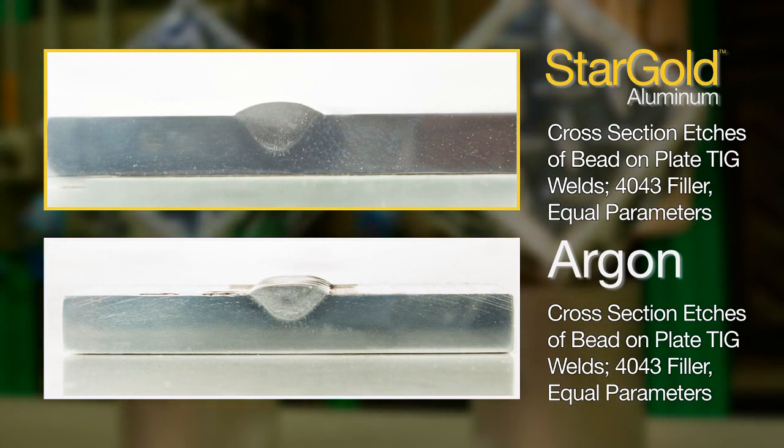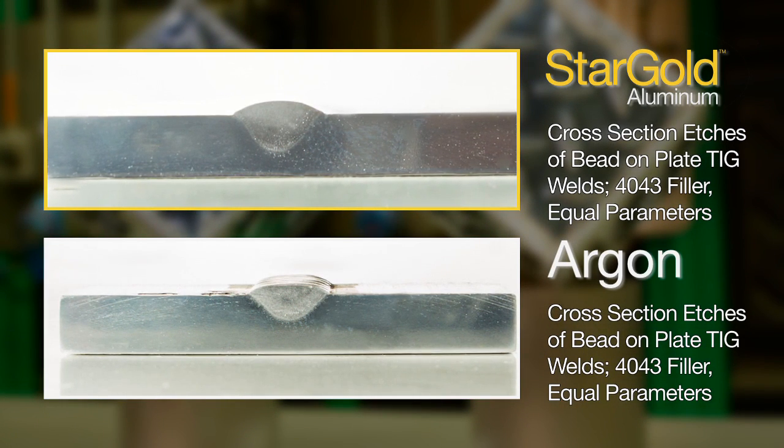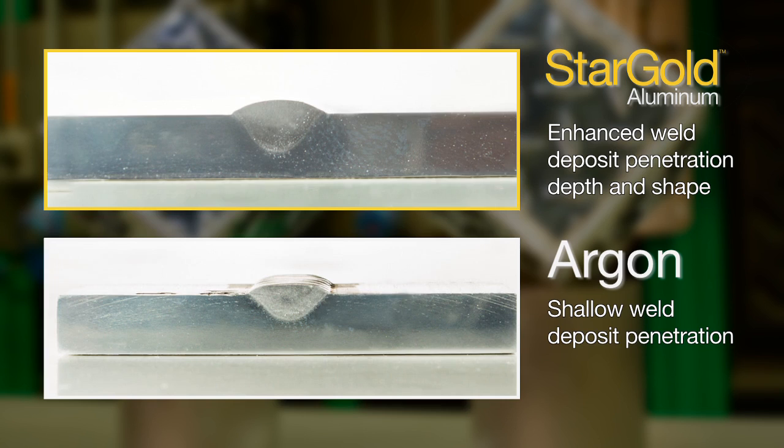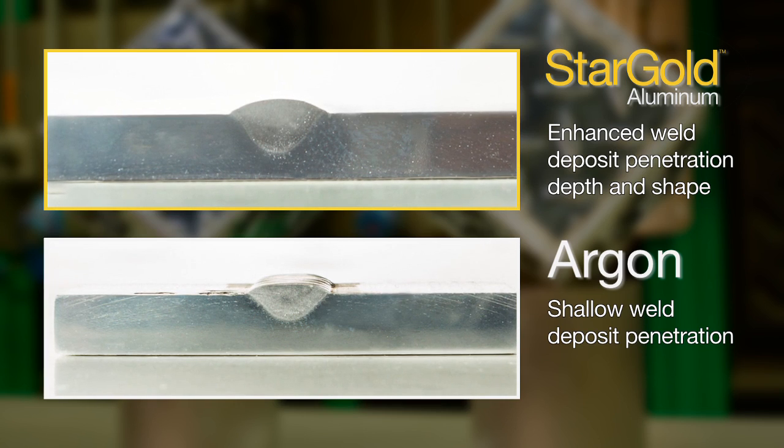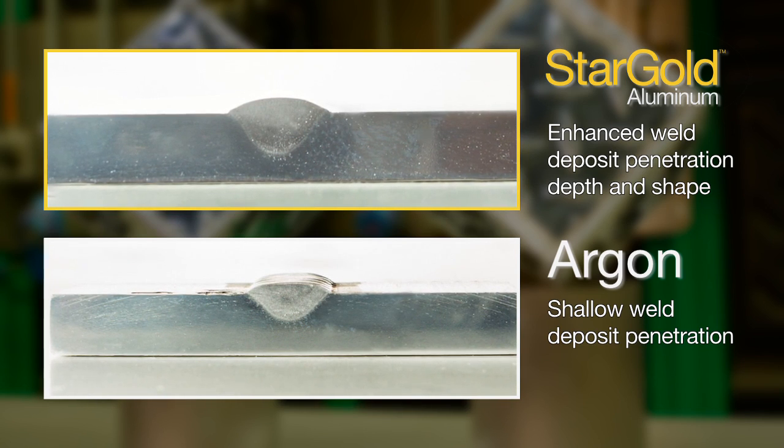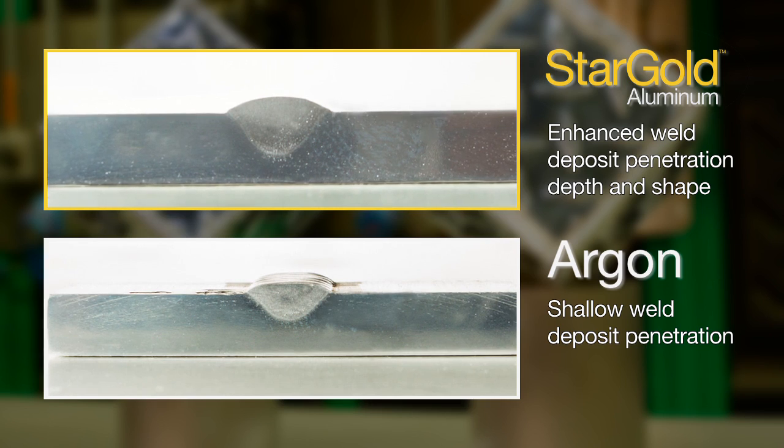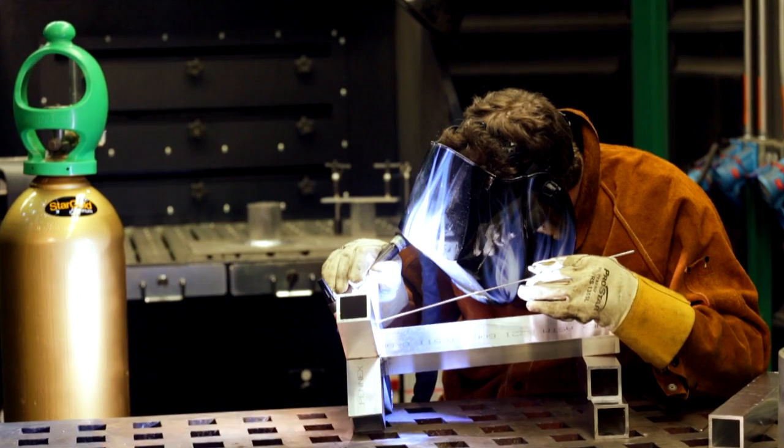Stargold Aluminum can provide increased arc energy and a higher electrode current density to improve penetration as seen in these weld cross sections. Weld deposit penetration, depth, and shape can be enhanced when using Stargold Aluminum.